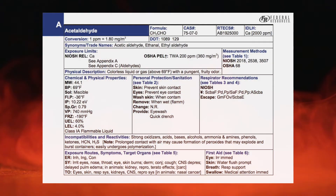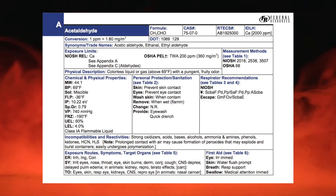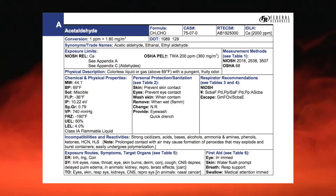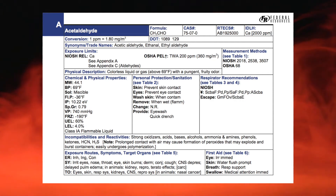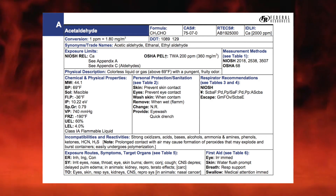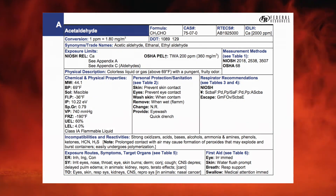Now we go to the book — acetaldehyde, page two. The physical description says it's a colorless liquid or gas. Worst-case scenario: if you see a dorsal fin, is it a dolphin or a shark? It's a shark — so we treat it as a gas until proven differently. The vapor pressure is 740 millimeters of mercury. Remember, 760 millimeters is when it turns to a gas, so 740 is extremely close to being a gas. It boils at 69 degrees Fahrenheit.